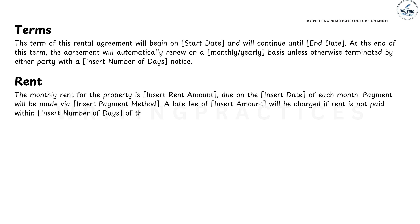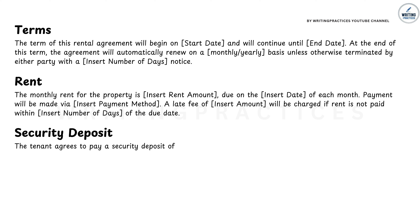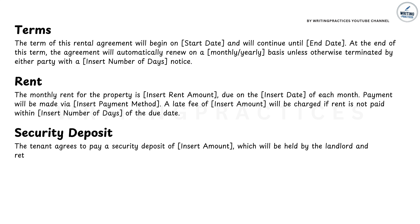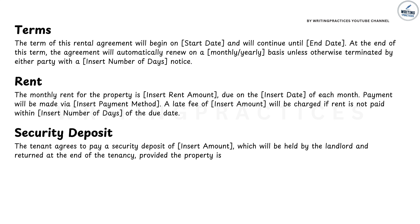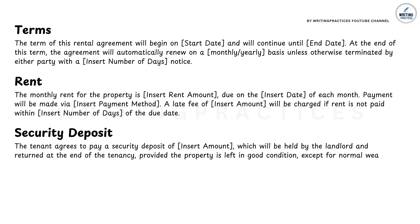Step 5: Mentioning the security deposit. Next, you'll include a section on the security deposit — the amount of money the tenant gives up front to cover any potential damage to the property. You should clearly state the amount of the deposit and how it will be handled. Mention that the deposit will be returned at the end of the lease if the property is left in good condition, except for normal wear and tear. This gives tenants peace of mind while protecting the landlord's property.